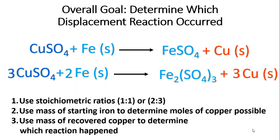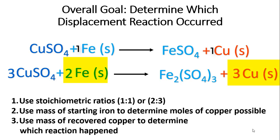So how do we know which one happened? That's the goal of this experiment. We'll use stoichiometric ratios. In the top reaction, the ratio of iron solid to copper solid is one to one. In the bottom reaction, the ratio of iron solid to copper solid is two to three.